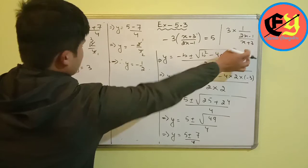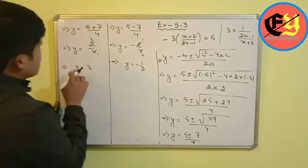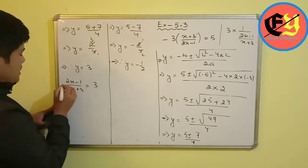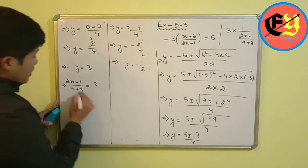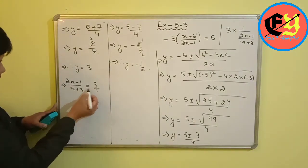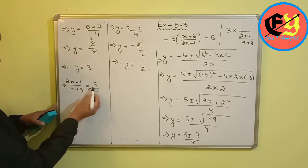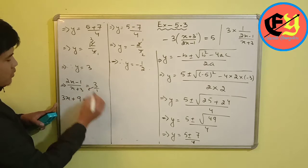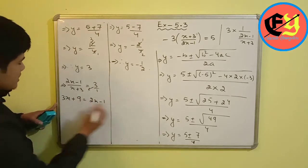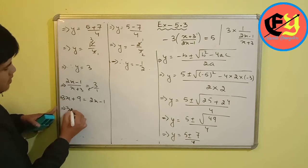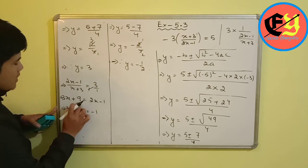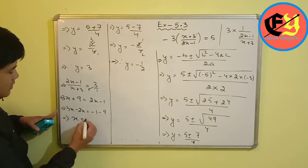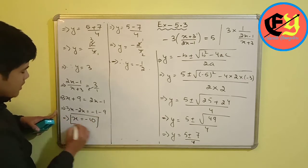Now substituting back: (2x minus 1)/(x plus 3) equals 3 (i.e., y equals 3). Cross multiplying: 3x plus 9 equals 2x minus 1. Shifting terms: 3x minus 2x equals minus 1 minus 9.